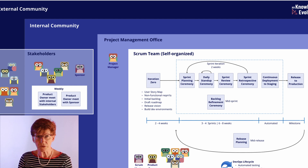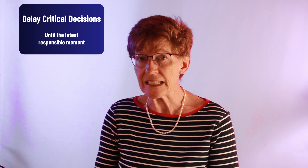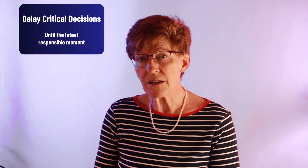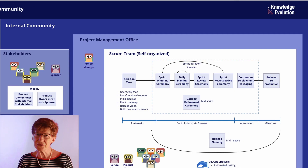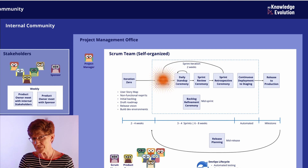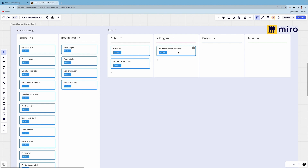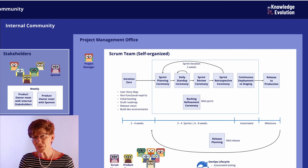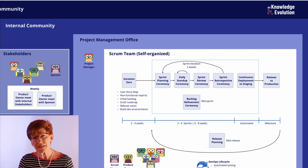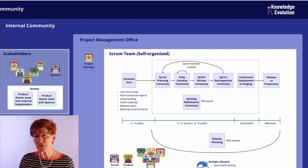To get started, we need an initial backlog refinement ceremony — also known as backlog grooming — where stories and tasks in the first sprint are defined in detail to the point where they are ready to start. We will leave all other backlog items loosely defined. At the beginning of each sprint, we hold a sprint planning ceremony, attended by the entire Scrum team. We bring the stories and tasks that are ready to start, review the current board from the previous sprint, move completed stories to done, and review the backlog. We get estimates from the team in story points or days, record the sprint goal, check the total story points, gather team consensus, and start the sprint.